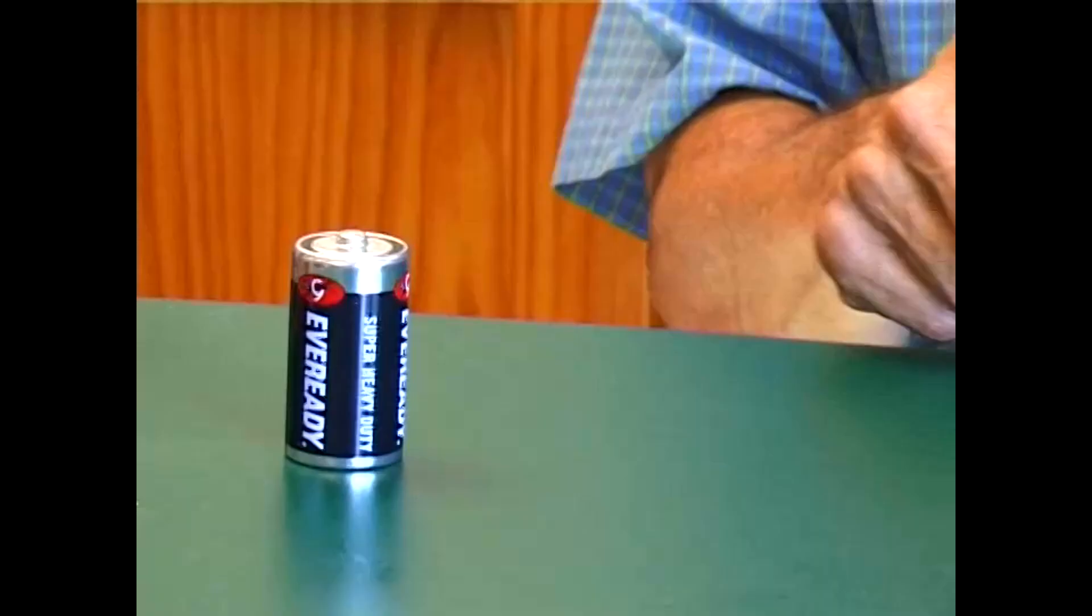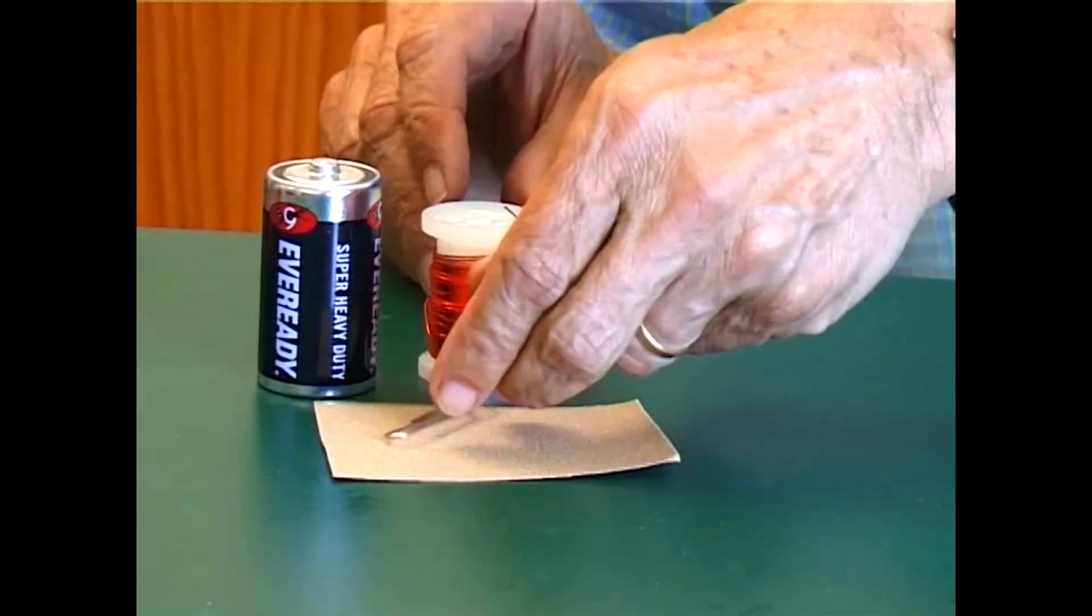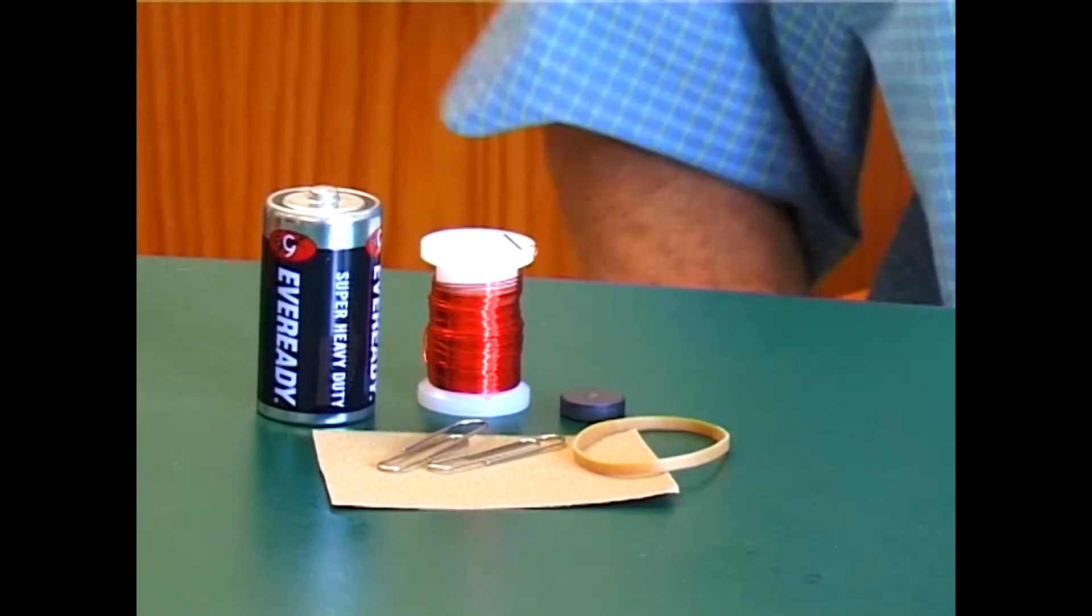You can make the world's simplest electric motor using a D cell, a little piece of sandpaper, some copper wire, two paper clips, a rubber band, and a small circular magnet. That's all you need.